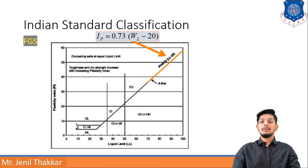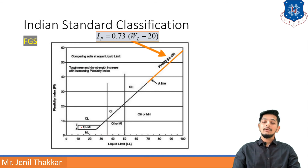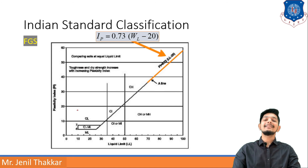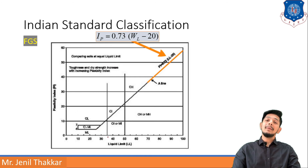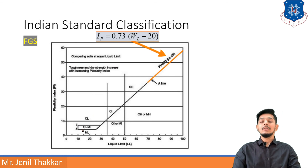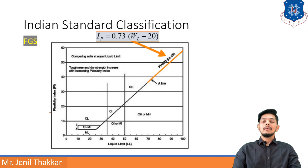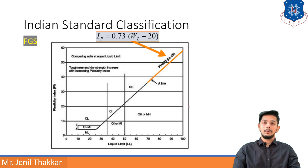If the liquid limit value is less than 35% and the PI value is above the A-line, it will be CL (clay with low plasticity). If it is below the A-line, it will be ML (silt with low plasticity). If PI is between 4% and 7%, it will be CL-ML, a combination of clay and silt with low plasticity.